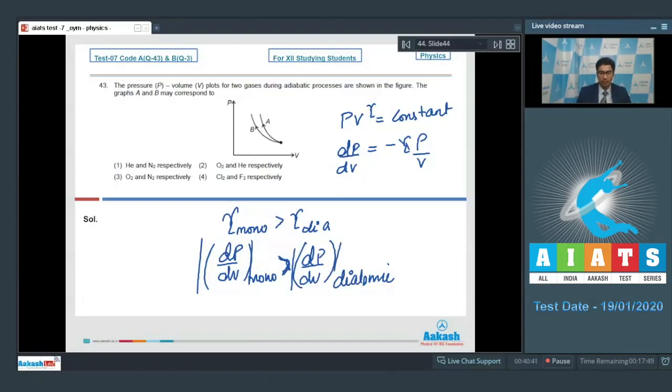Dear students, from the graph we can see that answer number one should be the correct answer because A has the greater slope than B. Therefore, A should be monoatomic and B should be diatomic.